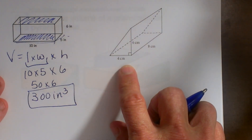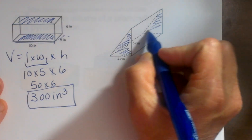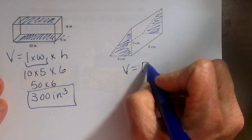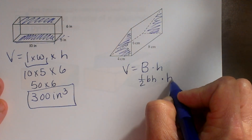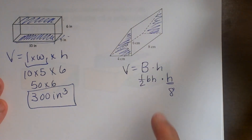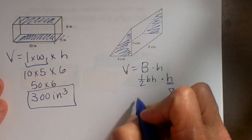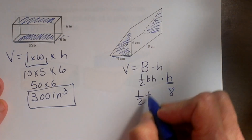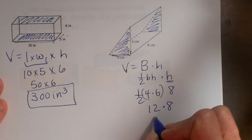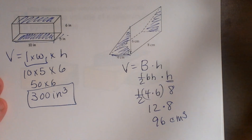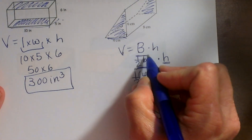This next one is trickier. Look for your parallel parts to identify the bases — here it's the two triangular faces. The area of a triangle is one half base times height, then times the length of the prism. The triangular base has base 4 and height 6, so one half times 4 times 6 is 12. Then 12 times 8 equals 96 centimeters cubed.